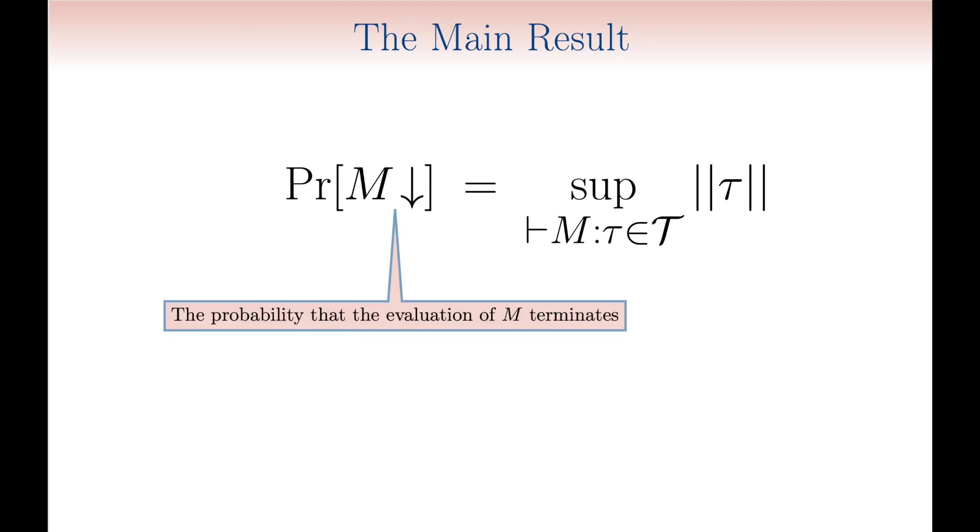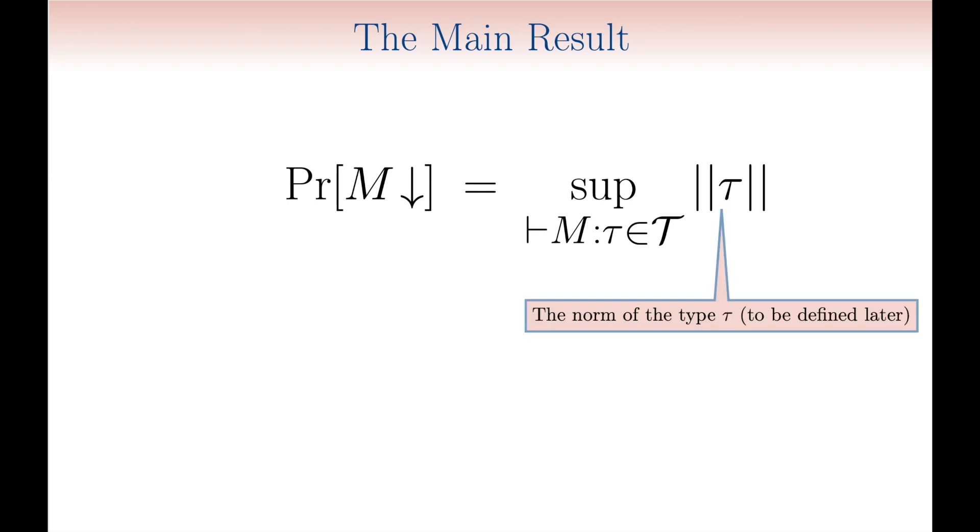Remember that we are working with randomized calculi here. On the right-hand side, there is a numerical value related to typability, namely, the norm of the types of a certain kind, which can be attributed to the term at end. Observe that we have to take the least upper bound.